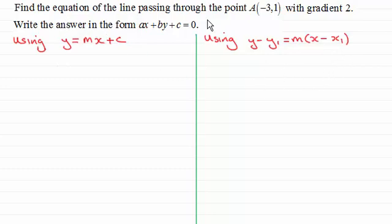And what I'll do is this question here, where we've got to find the equation of a line passing through a given point, A in this case, with coordinates minus 3, 1, and it has a gradient of 2. And we've got to write the answer in the form ax plus by plus c equals 0.